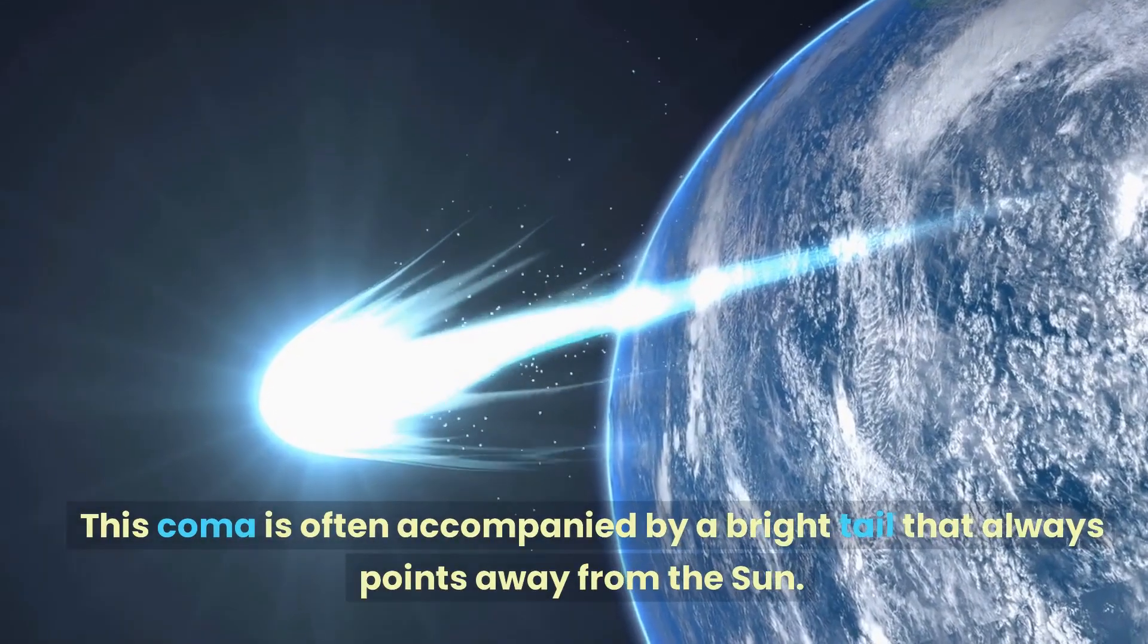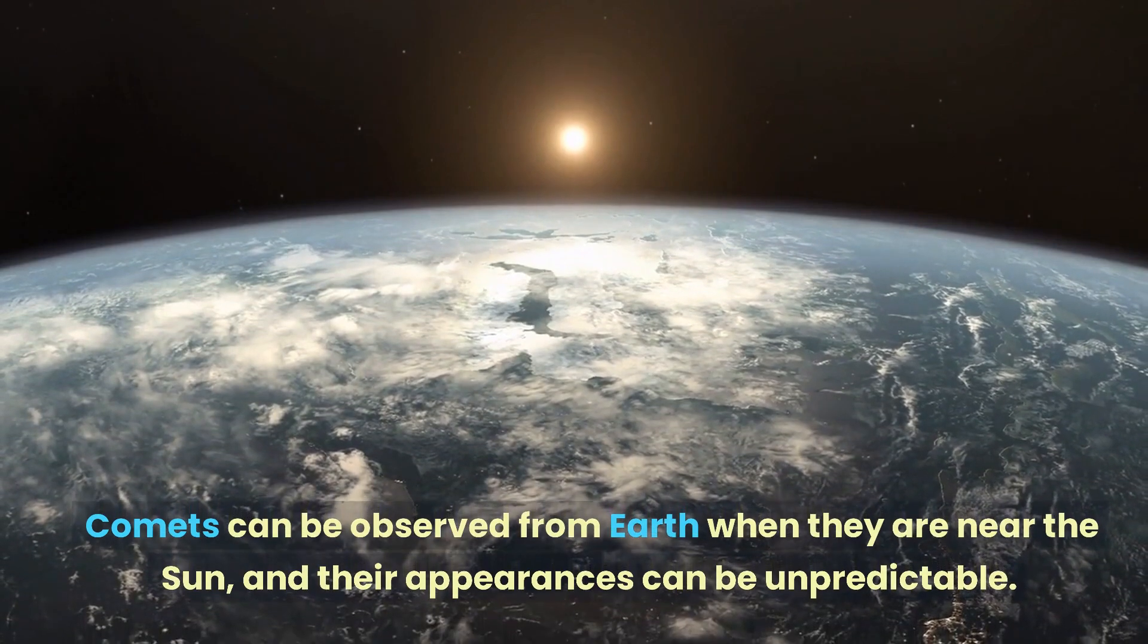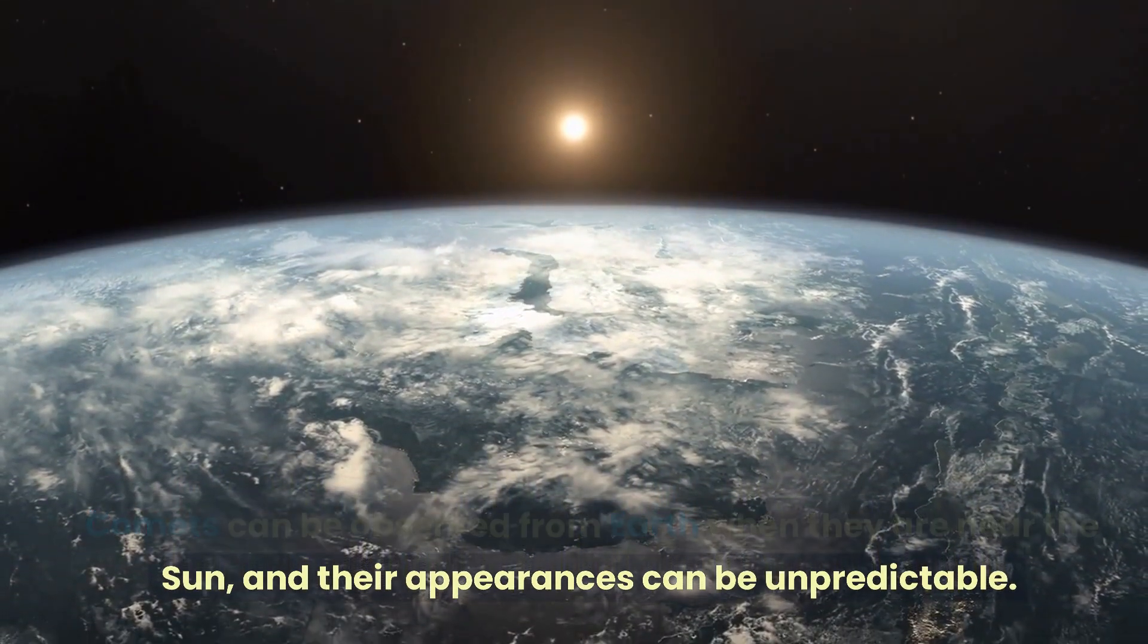This coma is often accompanied by a bright tail that always points away from the sun. Comets can be observed from Earth when they are near the sun, and their appearances can be unpredictable.